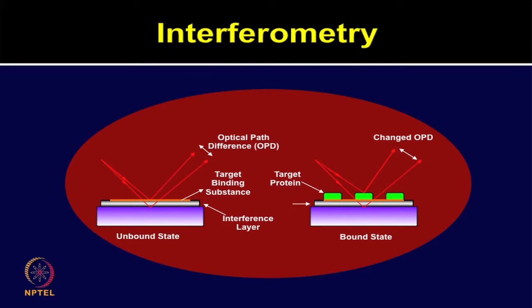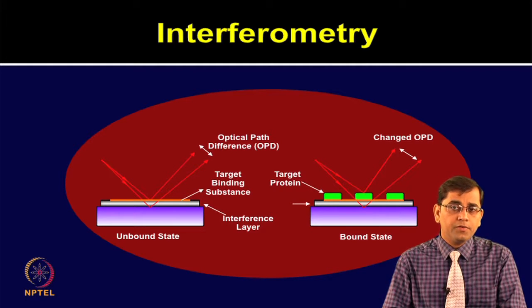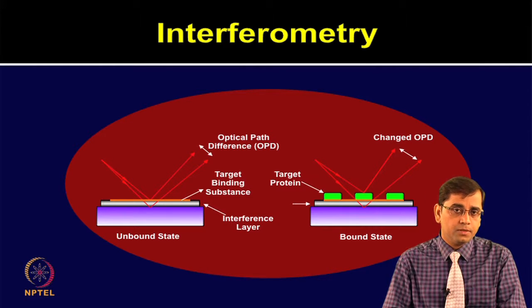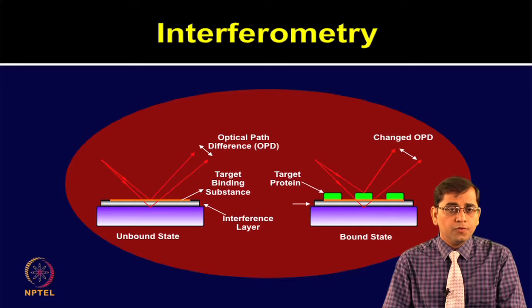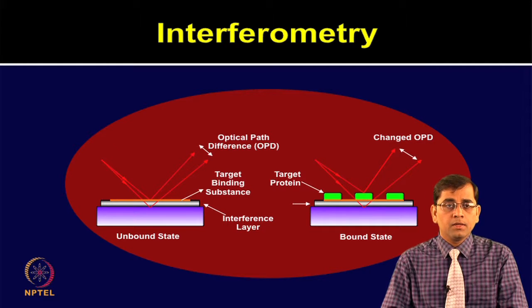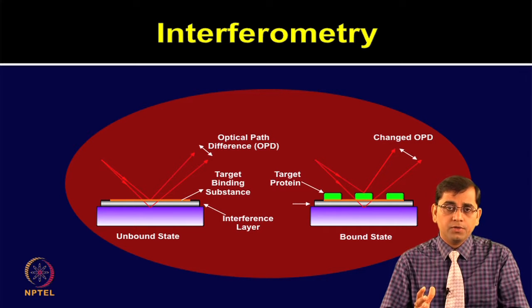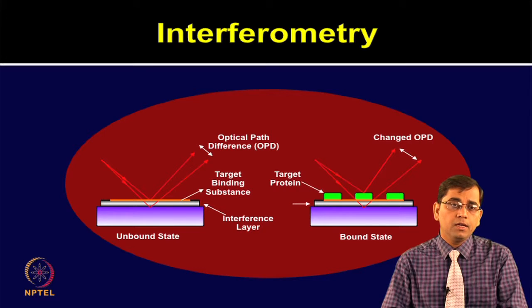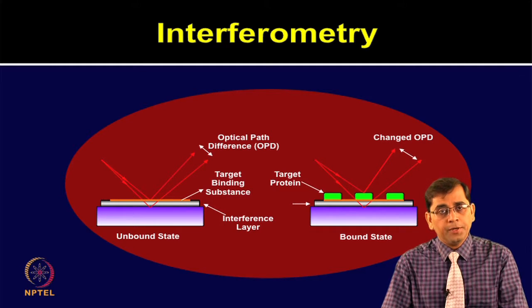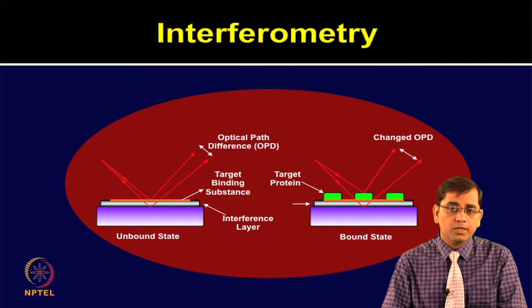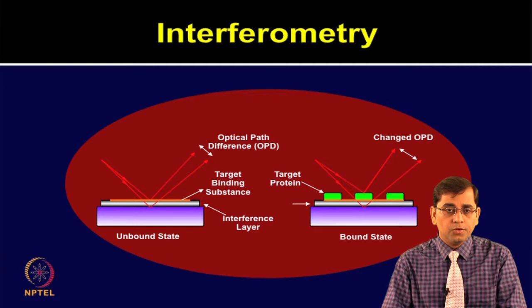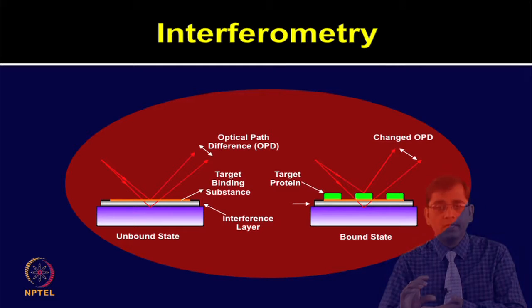Let us look at the interferometry principle in detail. In interferometry, the phase difference of wave fronts is transformed into observable intensity fluctuations, known as interference fringes. The interferometry techniques relate the optical phase to biomolecular layer density on the surface. The signal is created by an additional phase shift or optical path length difference caused by the adsorbate bio-layer. Biomolecules are printed on the surface; the left panel shows the unbound state, and the right panel shows the target protein bound state, where the optical path length difference due to protein binding is measured.